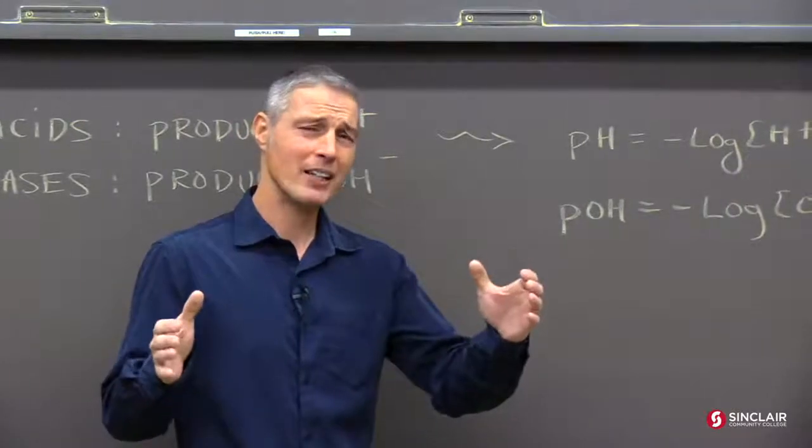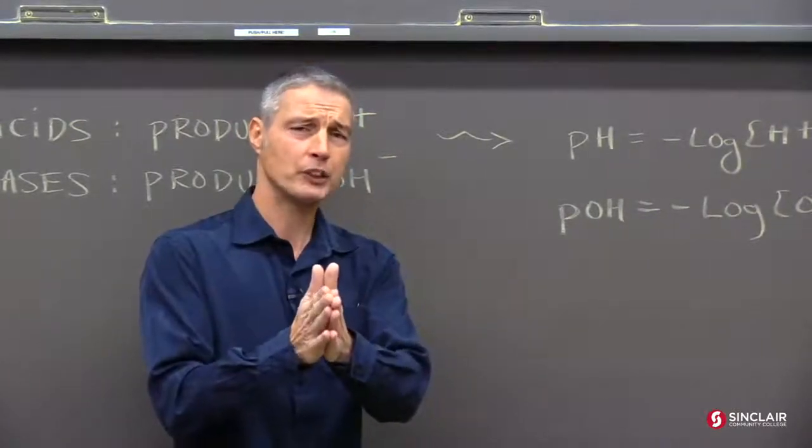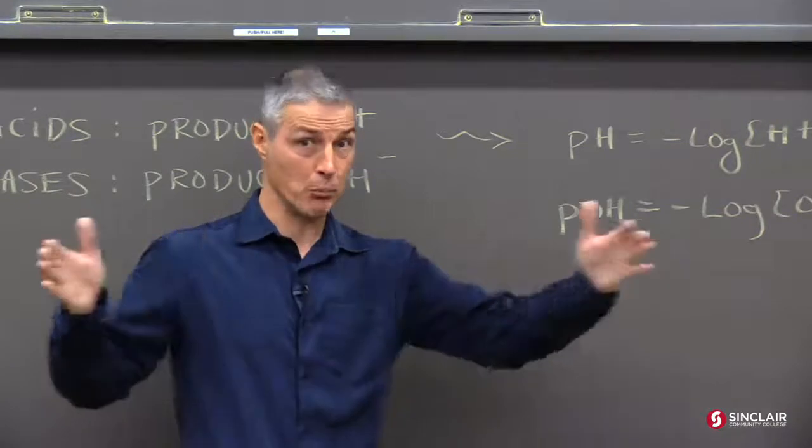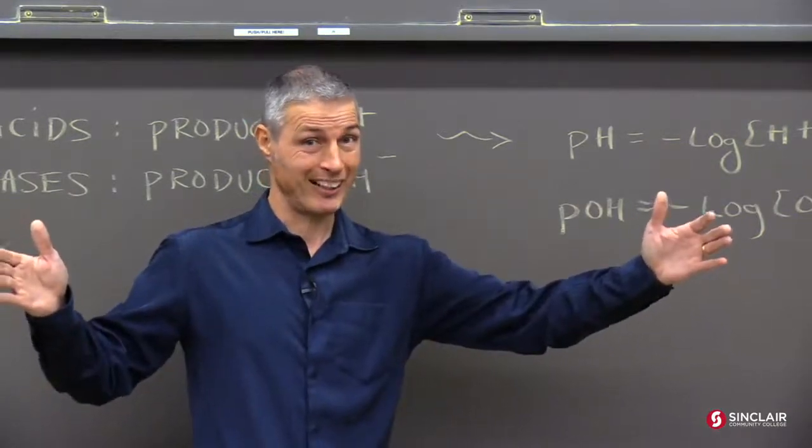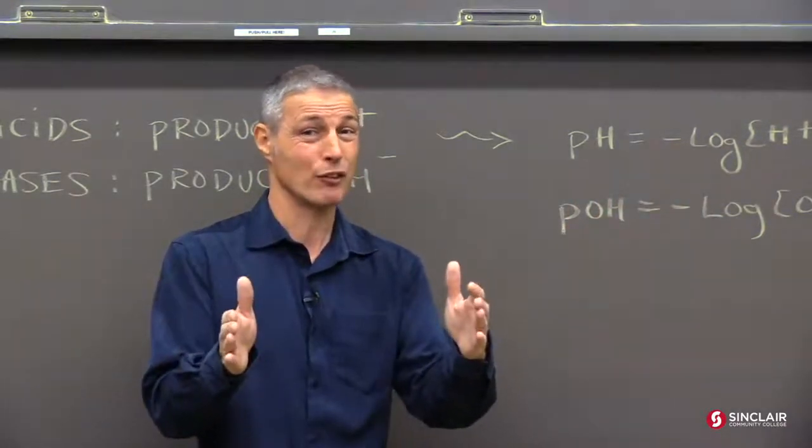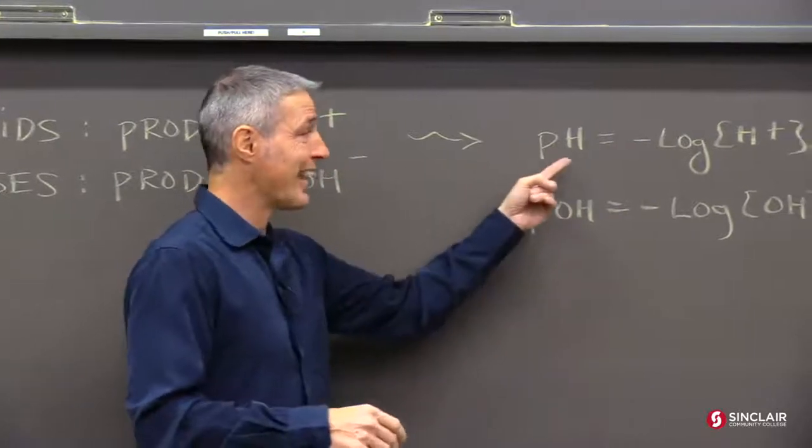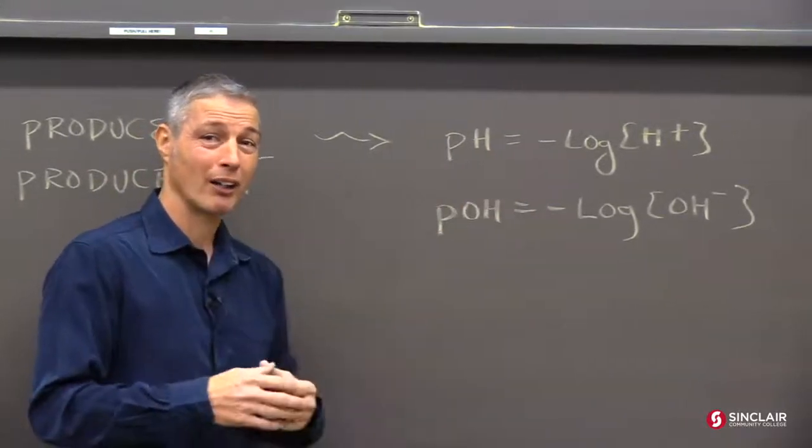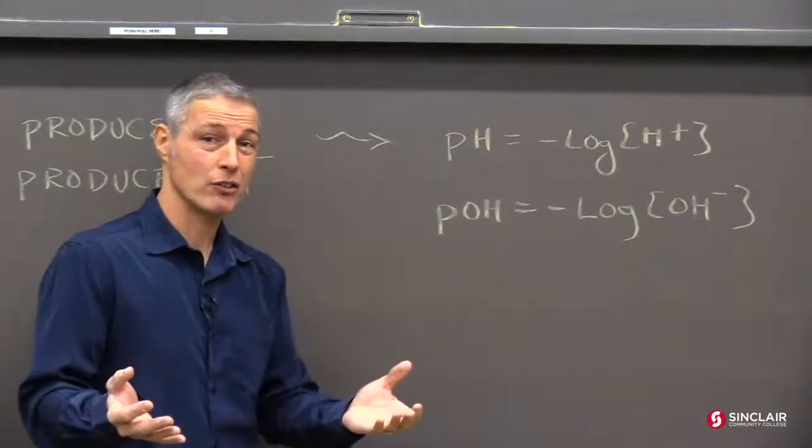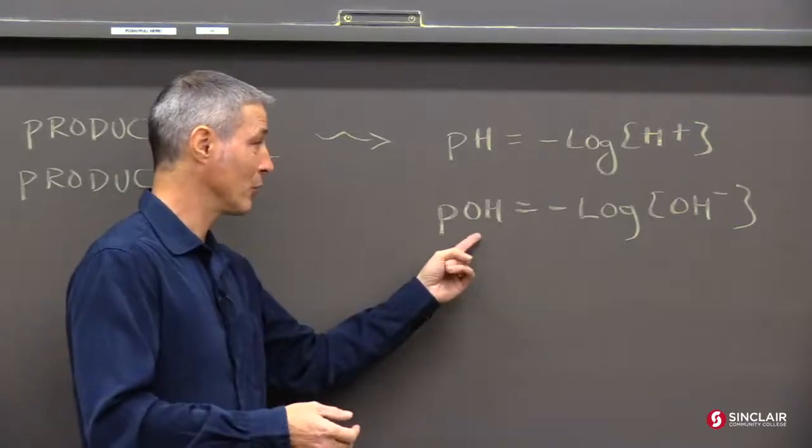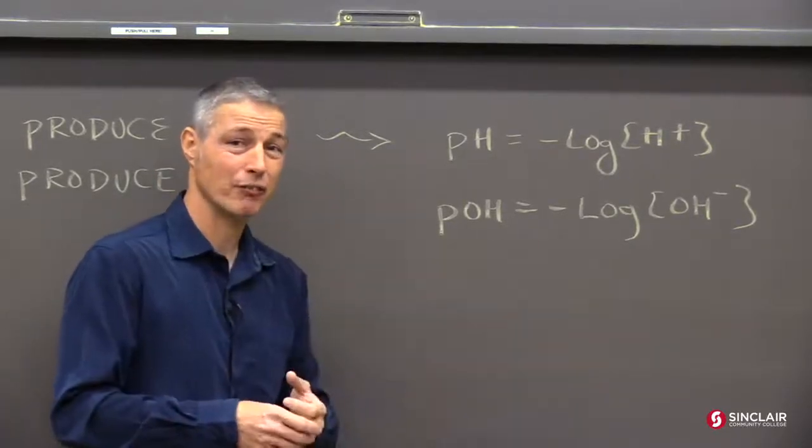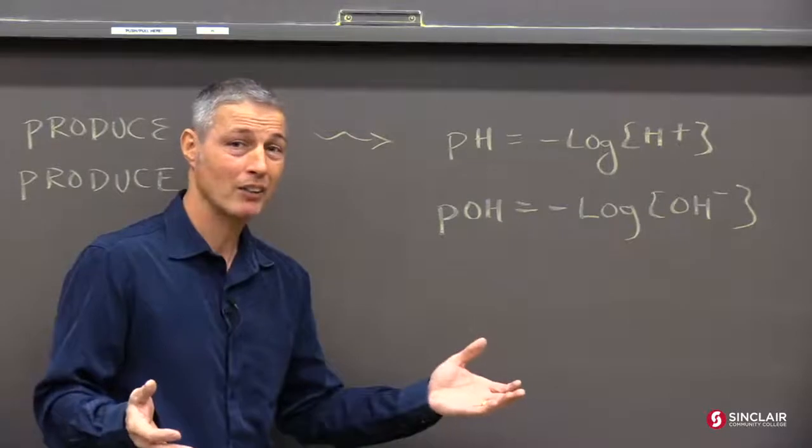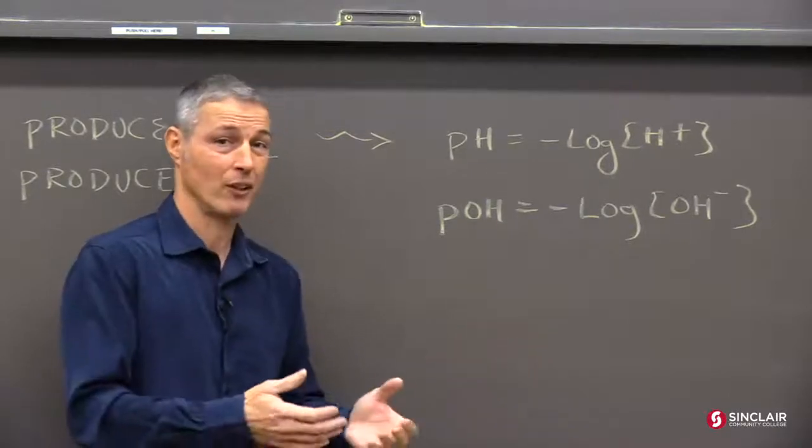And here's the thing. The pH scale's logarithmic, which is basically a way of taking a big wide range of numbers and squeezing it down into something that's easier to talk about. pH is the negative log of the H+ concentration, or how acidic something is.